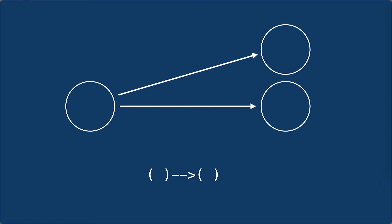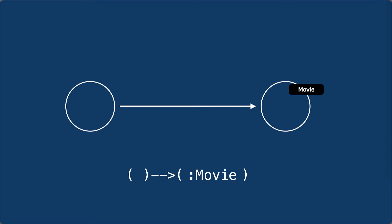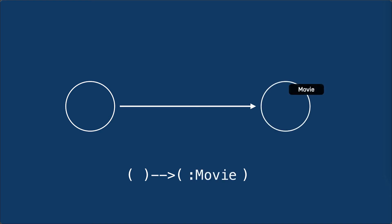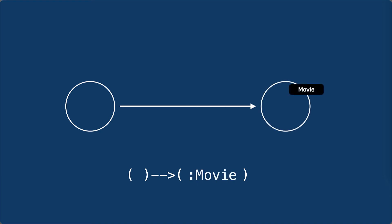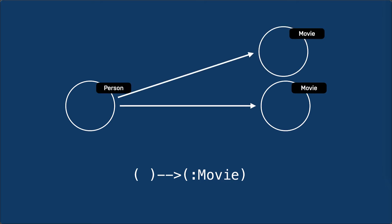Here is a Cypher pattern where we specify a label for a node. We use the colon label syntax to represent all movie nodes in the graph that have a relationship from other nodes in the graph. For example, this person node has a relationship to two different movie nodes in the graph.